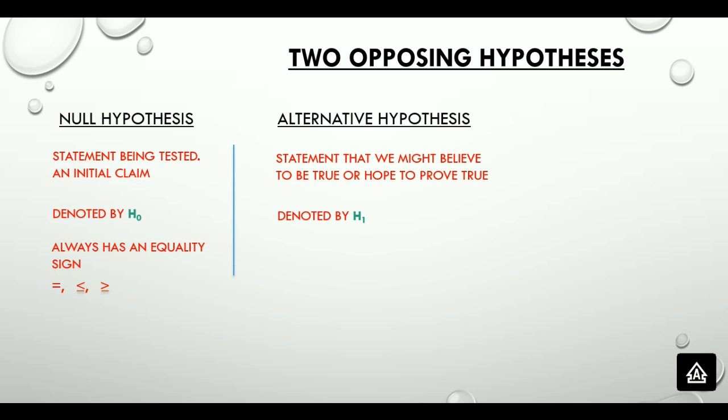The null hypothesis can use equal to, less than or equal to, or greater than or equal to. On the contrary, an alternative hypothesis can never have an equality sign. It could be not equal to, less than, or greater than.